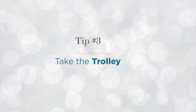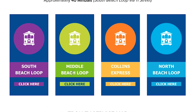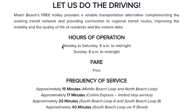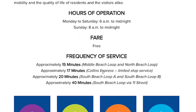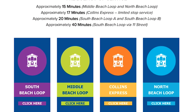While you're on South Beach, there are a couple of ways to get around on a budget. The first is that there is a free trolley! There are four trolley lines: the South Beach Loop, the Middle Beach Loop, Collins Express, and the North Beach Loop. The trolley runs Monday through Saturday from 6 a.m. to midnight, and Sundays from 8 a.m. to midnight. Frequency depends on the line — Middle Beach runs every 15 minutes, while the South Beach Loop via 11th Street runs around every 40 minutes. All maps and routes will be linked in the description box below.